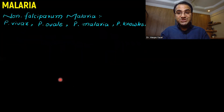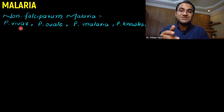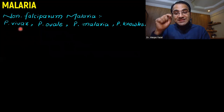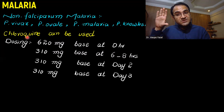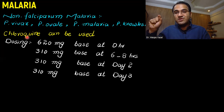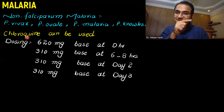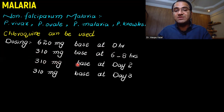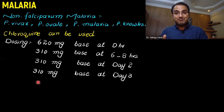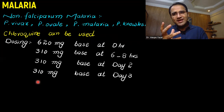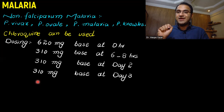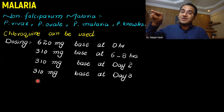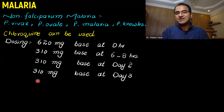For non-falciparum malaria caused by vivax, ovale, malariae, and knowlesi, you can use chloroquine. Remember, in falciparum malaria you cannot use chloroquine because it is not sensitive to it. Chloroquine is given as 620 mg base at the start, 310 mg base at 6 to 8 hours, then 310 mg base repeated on day two and day three. These doses are timed to hit the life cycle of plasmodium so that it cannot replicate.